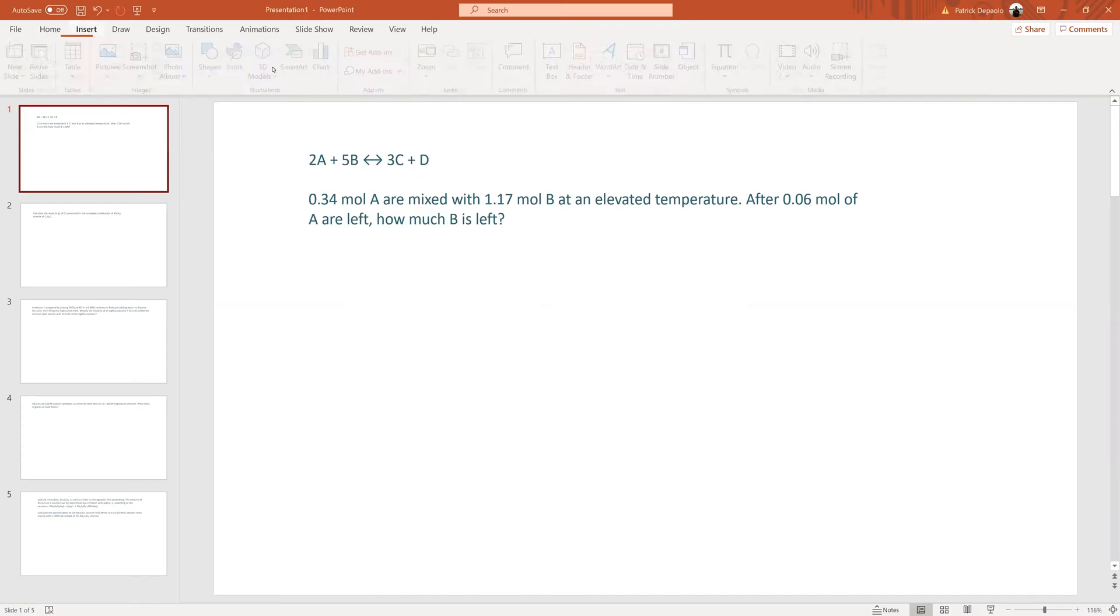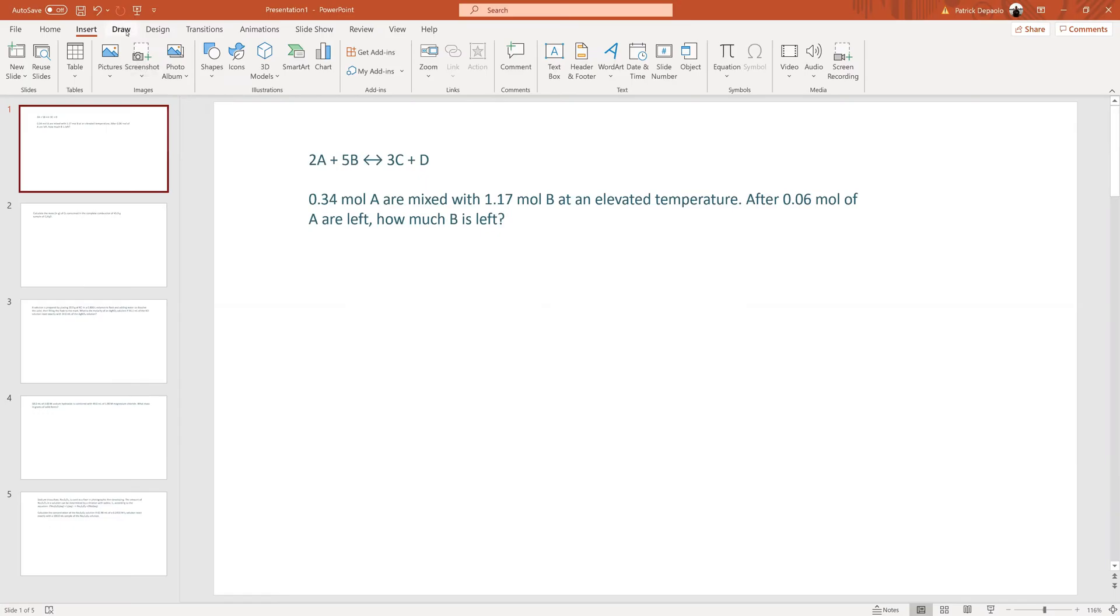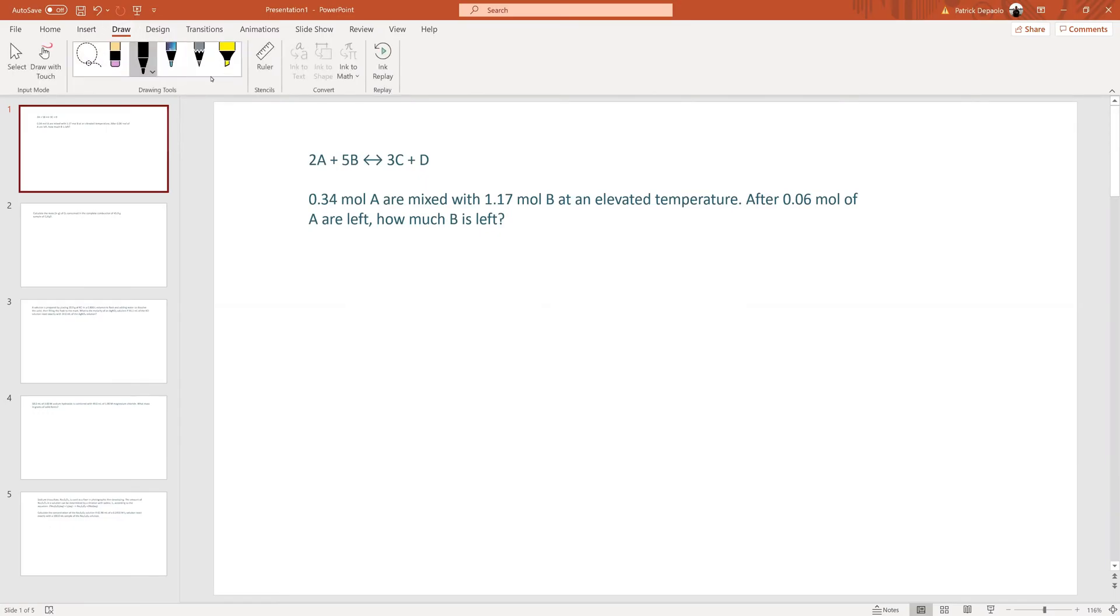There's a lot going on here, and the first thing you need to do is determine the limiting reactant. If we have 0.34 moles of A, we want to ask ourselves how much of a specific product will that make? We can compare it to any product, whether it be C or D, but for simplicity, let's compare it to D since D only has one mole.